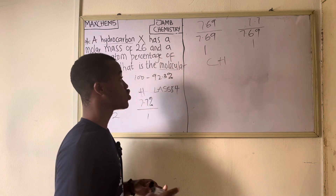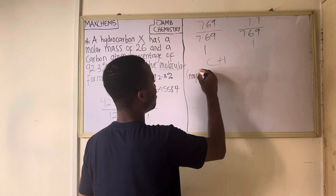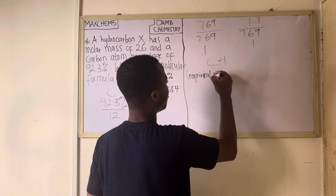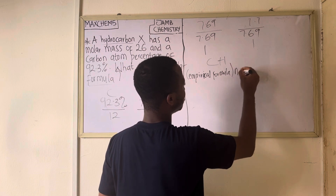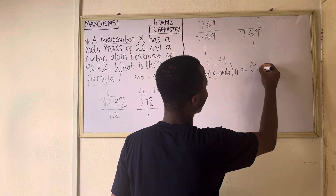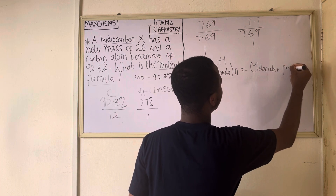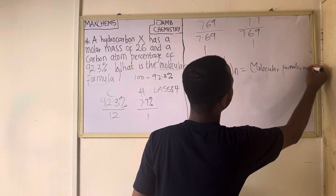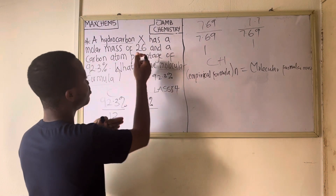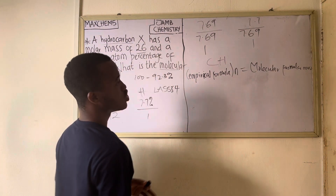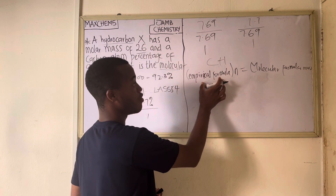The formula is: (empirical formula mass) × n = molecular formula mass. In the question, don't forget that we are given the molecular mass to be 26. So we can replace that as the molecular formula mass, and we just need to calculate our empirical formula mass as well. Our empirical formula is CH.